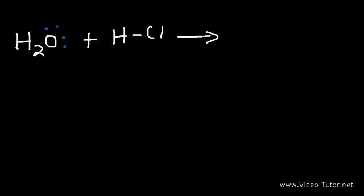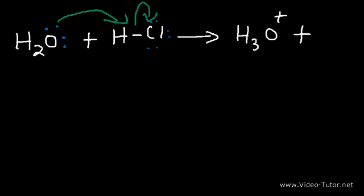Now the first thing that we need to do is show what happens when we put water with hydrochloric acid. Now hydrochloric acid is a very strong acid. It ionizes to completion and so in the presence of HCl water is going to act as the Bronsted-Lowry base. It's going to grab a hydrogen and the bond between H and Cl will break. Chlorine is going to pull those electrons toward itself. Right now chlorine has three lone pairs but it's about to have four. So the products of this reaction will be H3O+ and the chloride ion.